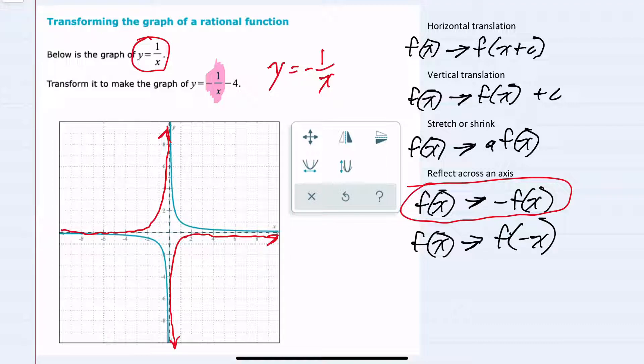But then we also need to take that function and add a negative 4. So when you add a negative 4 here, this is a vertical translation. Adding the negative 4 shifts our function down 4 units. So if we were to take the red function here where we've already flipped it, and now shift it down 4 units...